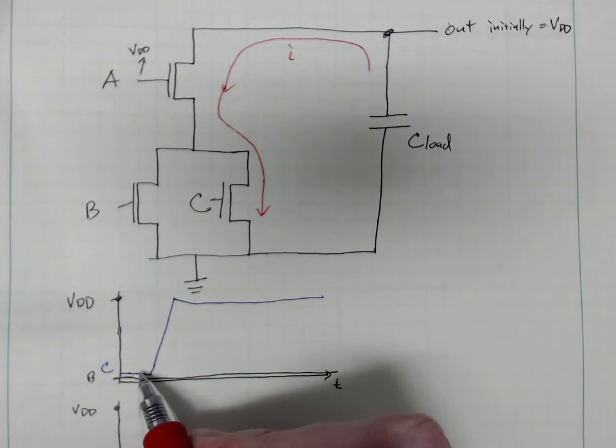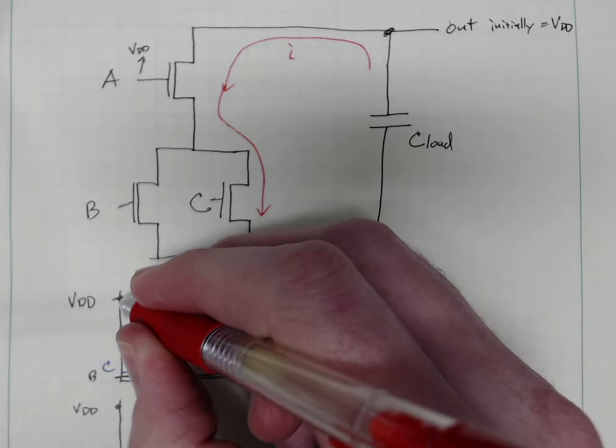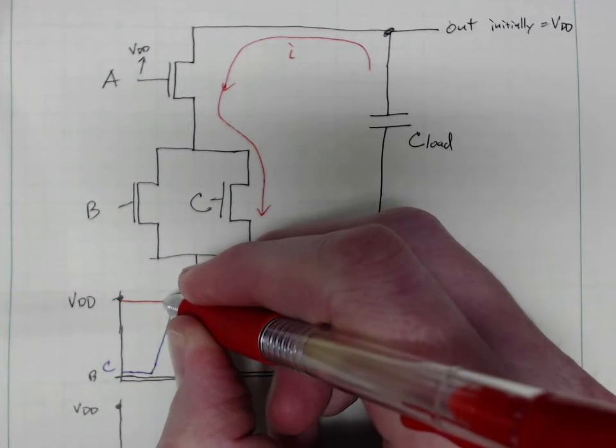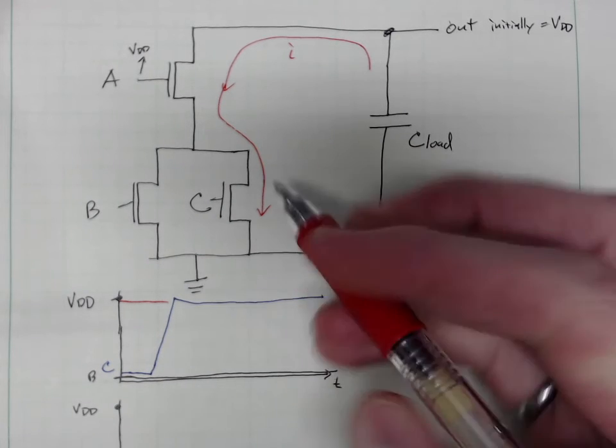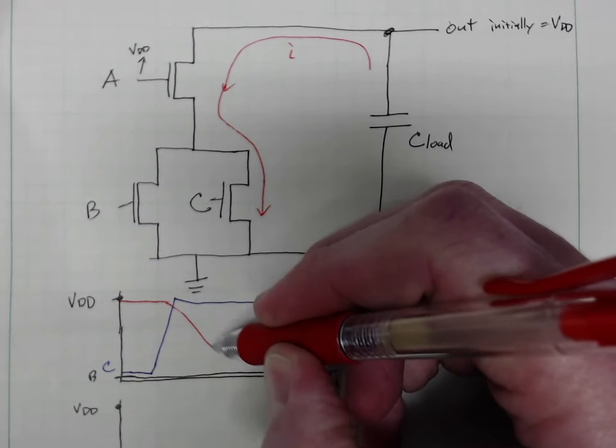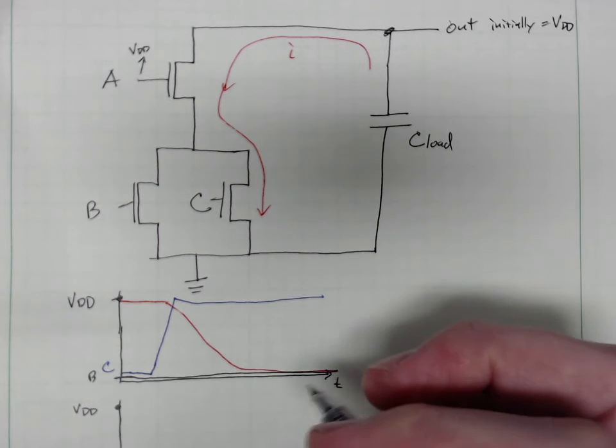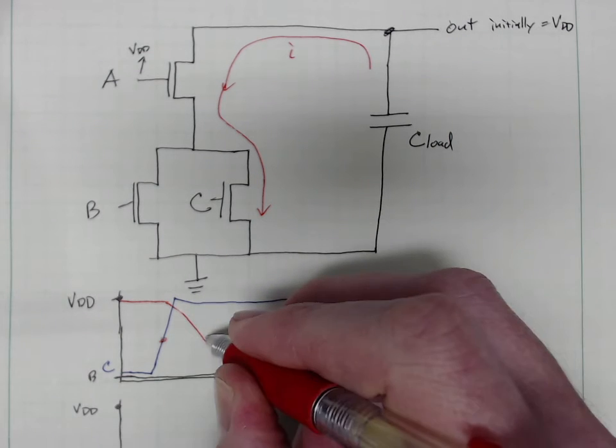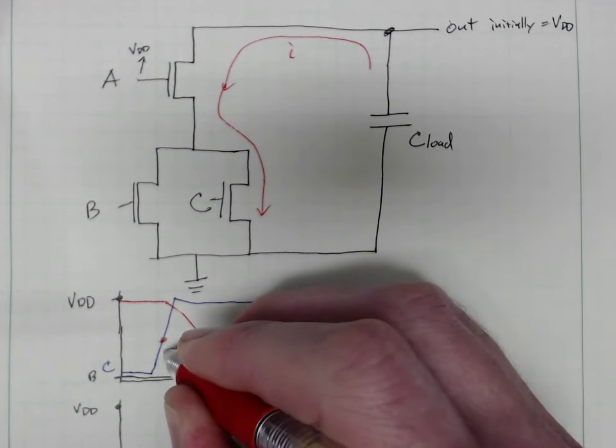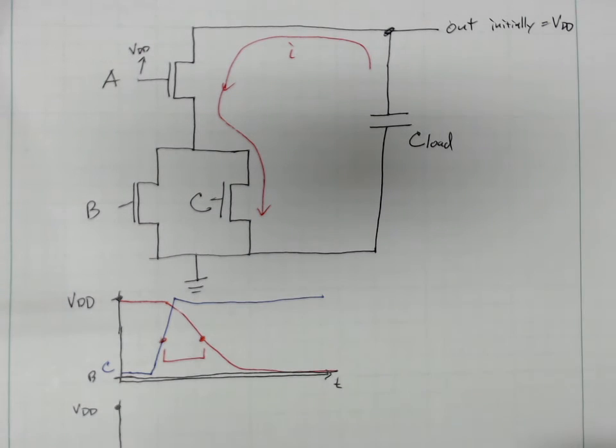Alright, so our output voltage, I'll use Y—it started red, it goes this way. Right here C turns on, our output is gonna go down at some speed. This is kind of greatly zoomed in onto this slope. We might compute a delay time of this time here, 50% to 50%.